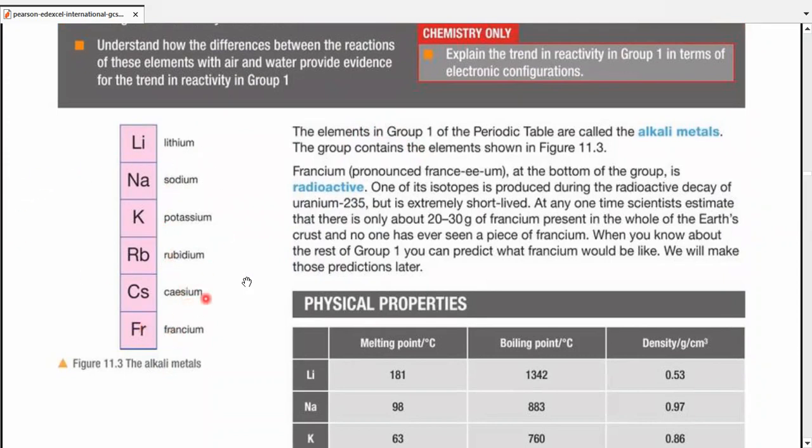Out of all these elements, only francium is radioactive, so we'll discuss it least and discuss the rest the most. Francium is radioactive. The isotopes are very short-lived and scientists predict that very small amounts are present, so we're going to go with the rest of it.